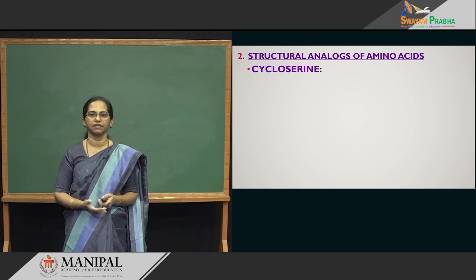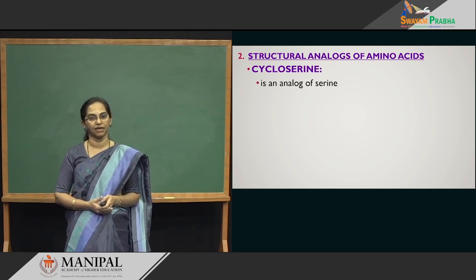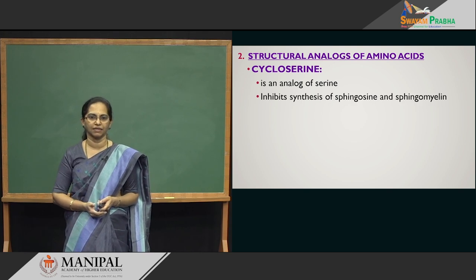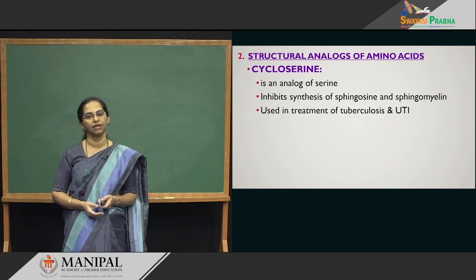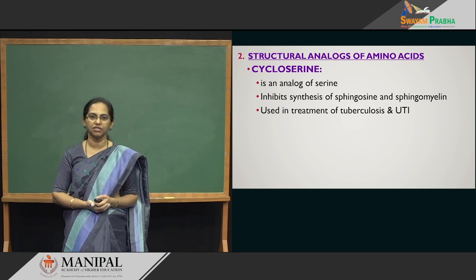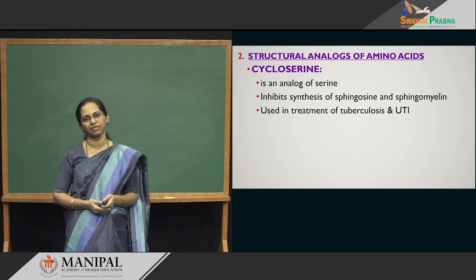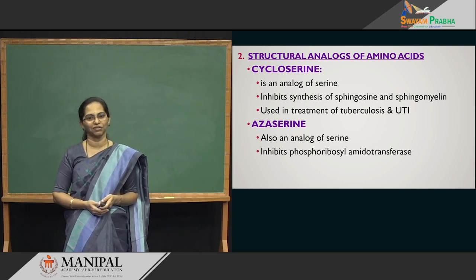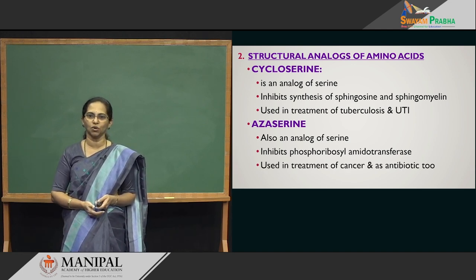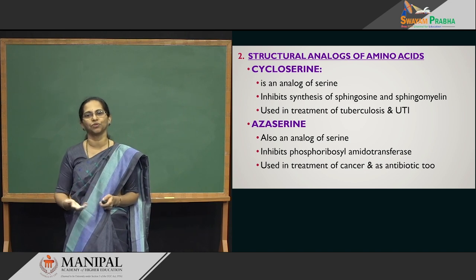Certain drugs mimic amino acids. The best example is cycloserine — an analogue of serine — which stops the synthesis of sphingosine and sphingomyelin and is used to treat tuberculosis or urinary tract infections (UTI). You also have azaserine, also an analogue of serine, which inhibits the enzyme phosphoribosylamidotransferase and is a very good anti-cancer agent — it stops cell division.